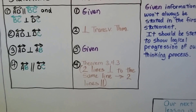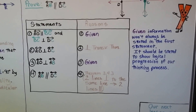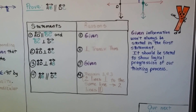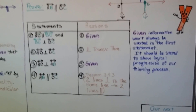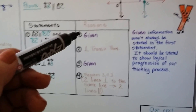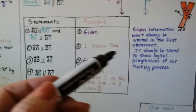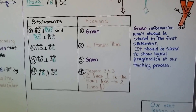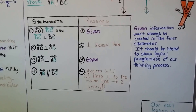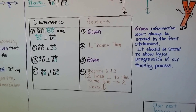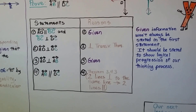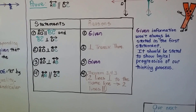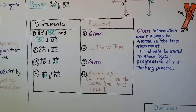We write it in shorthand like that. Notice that the given information won't always be stated in the first statement. Here we used part of the given, then had another reason — a theorem — and then had the given again. It should be stated to show logical progression of our thinking process, so sometimes we might have to split the given up to have a logical progression of thought.